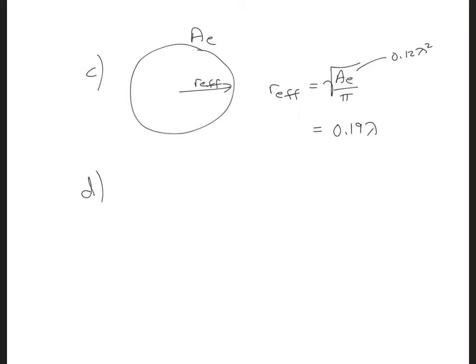In part D, we can find that the effective radius of 0.19 lambda is about twice the length of the dipole, which was just 0.1 lambda.